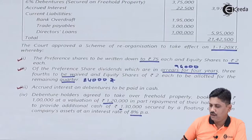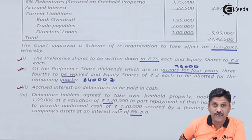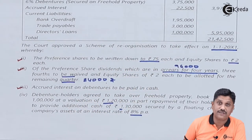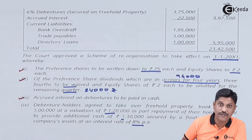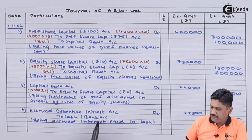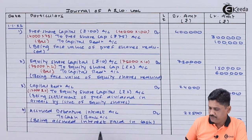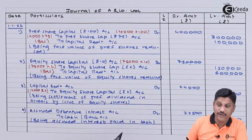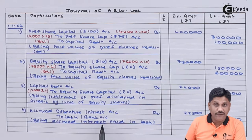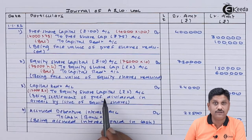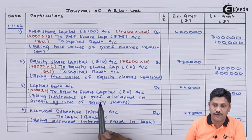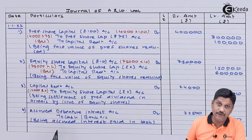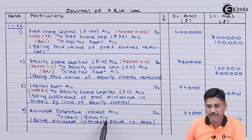Journal Entry 4: Accrued interest on debentures is a recorded liability paid in cash. Entry: Accrued Debenture Interest Account debit to Cash/Bank. Narration: Being accrued interest paid in cash. Important distinction: unlike the preference dividend arrears (unrecorded, so debited to Capital Reduction), this is a recorded liability, so we debit the liability account and credit the mode of payment (cash/bank).